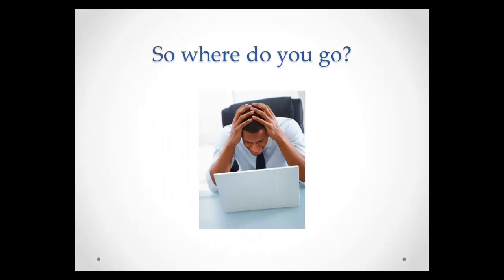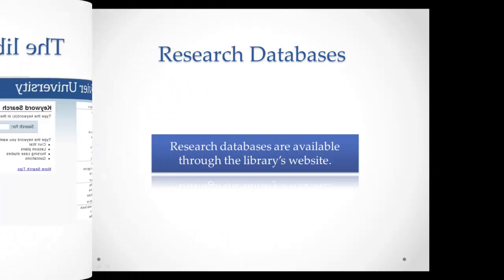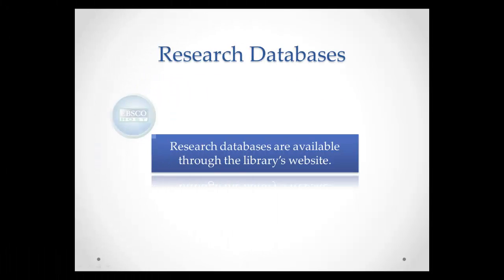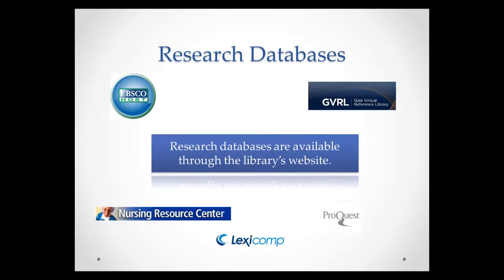The library has many resources that are appropriate to use for your nursing research assignment. You can use the online library catalog to find books, videos and DVDs, and other items in the library. You can also use databases to find journal articles, many from scholarly publications. Research databases are available through the library's website.